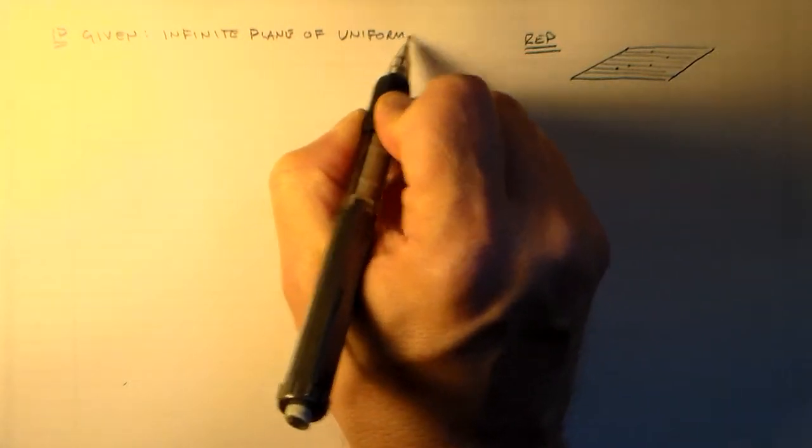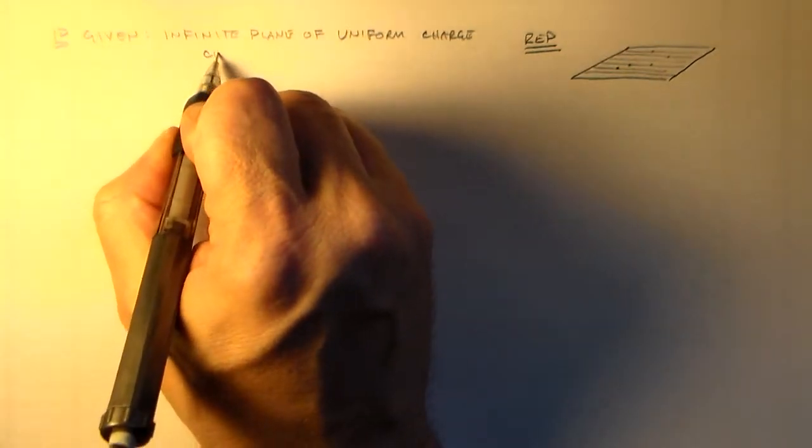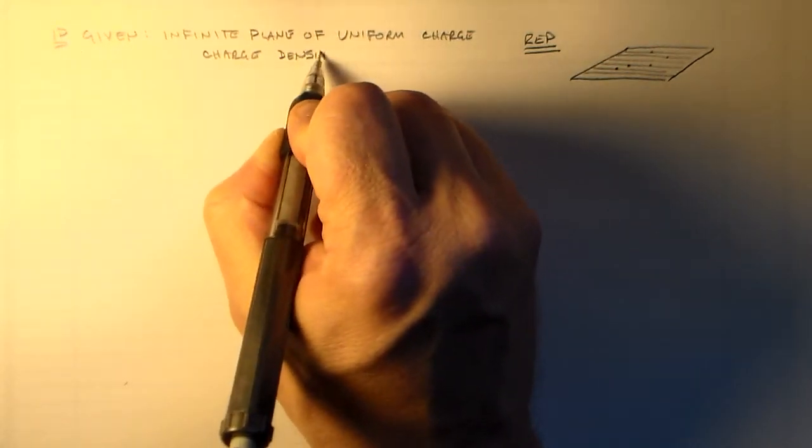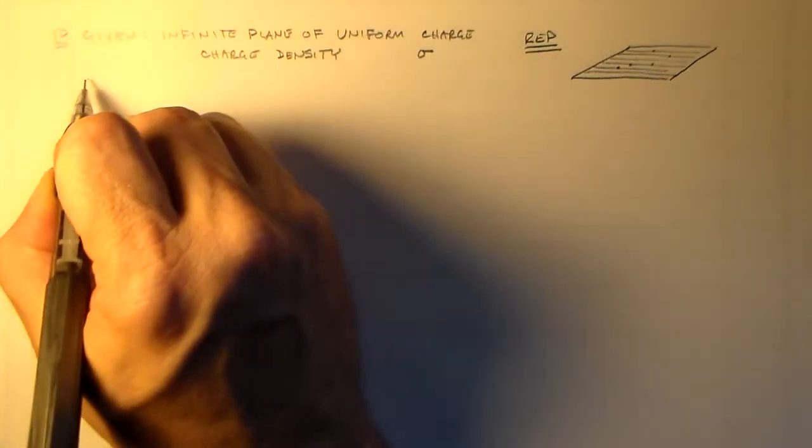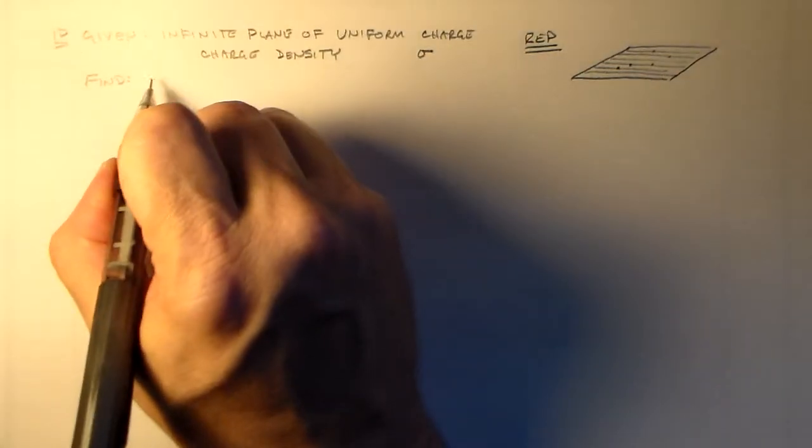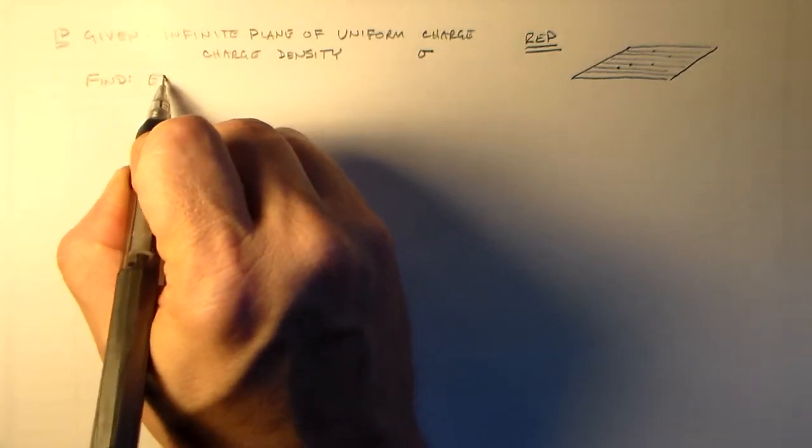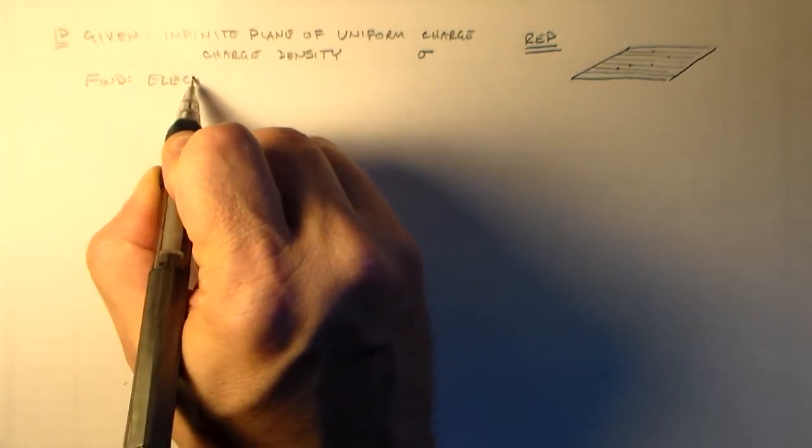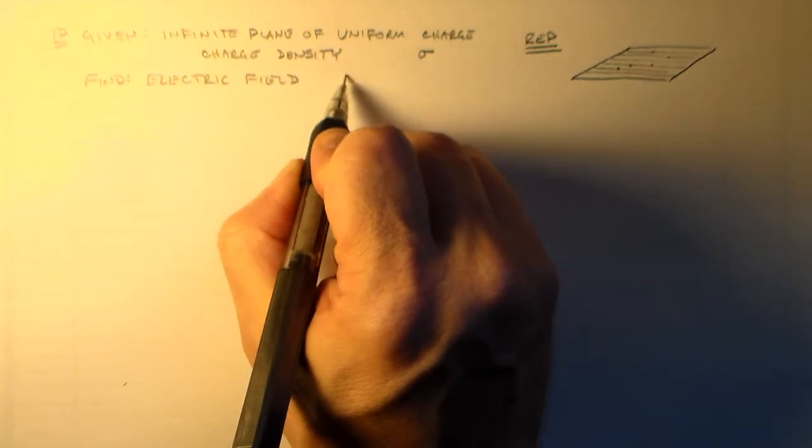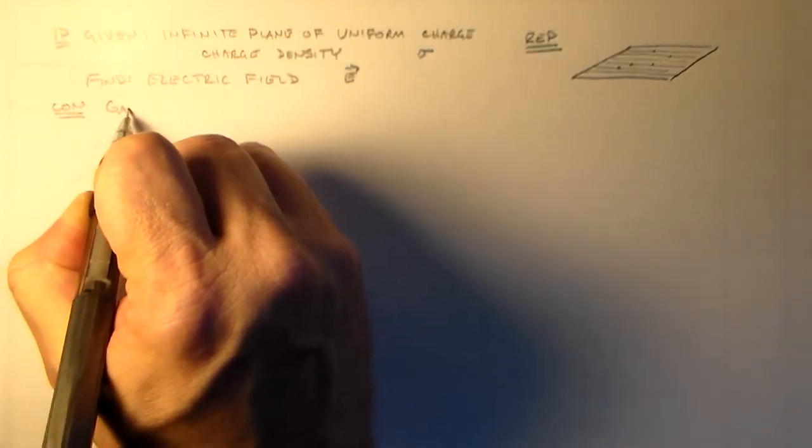So I'd like to try that again but this time I want to use Gauss's Law. Partially the reason for that is I want to show you how much easier with Gauss's Law it is to do this. So we've got this electric field that we're trying to find from this infinite plane of uniform charge density. And again the concept behind this solution is Gauss's Law.